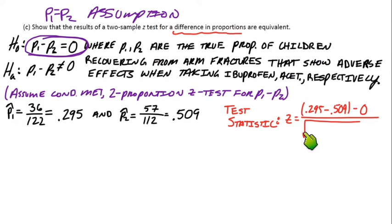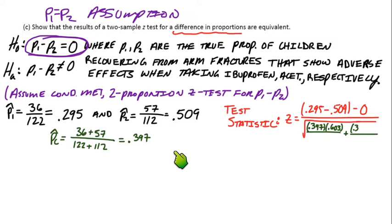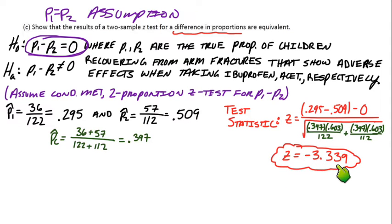Our test statistic, our z-score: subtract those two sample proportions compared to 0, because we start out assuming there's no difference in our null hypothesis. So we subtract p-hat-1 minus p-hat-2. In the denominator, don't forget we have to get a pool proportion—total number of successes divided by total sample size combined. On top, that's 36 plus 57. On bottom, 122 plus 112, which is 0.397 as a decimal. I'll use that in the denominator for my pool proportion. The sample sizes: n1 is 122, n2 is 112, which gives me a z-score of negative 3.339.